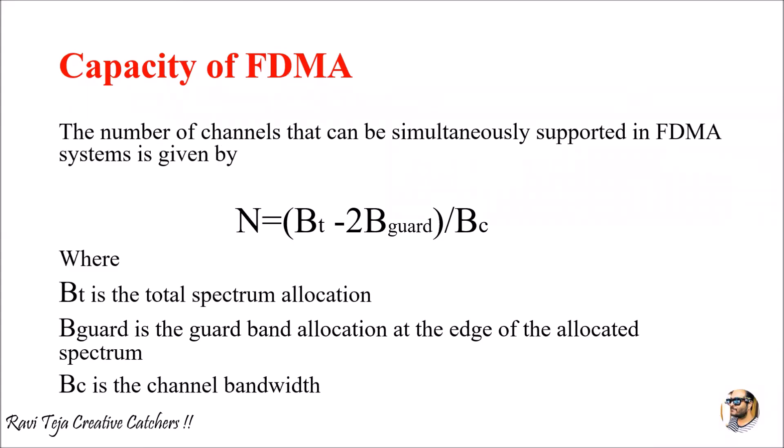The capacity of FDMA — the number of channels that can be simultaneously supported — is calculated by: N = (B_T − 2·B_guard) / B_C, where B_T is the total spectrum allocation, B_guard is the guard band allocation at the edge of the allocated spectrum, and B_C is the channel bandwidth. Based on these three parameters, the capacity of an FDMA system can be estimated.